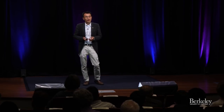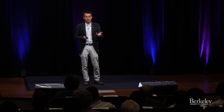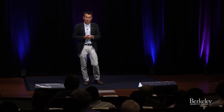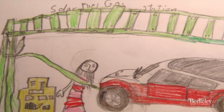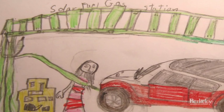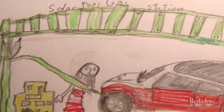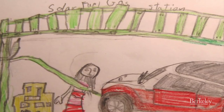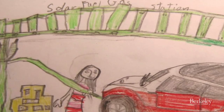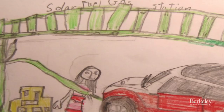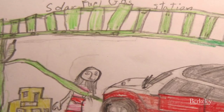With this artificial photosynthetic technology in hand, I think in the near future our gas station may look like this — we will have this solar fuel generator installed on the rooftop of our gas station so that we can produce the gasoline on-site.